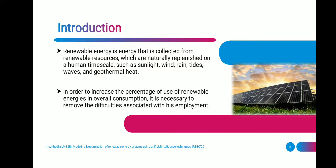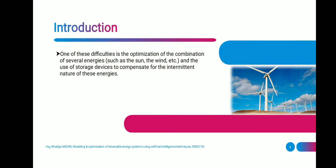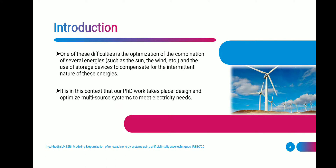In order to increase the percentage of use of renewable energies in overconsumption, it is necessary to remove the difficulties associated with its employment. One of these difficulties is the optimization of the combination of several energies such as the sun, the wind, etc., and the use of storage devices to compensate for the intermittent nature of these energies. It is in this context that our PhD work takes place: to design and optimize multi-source systems to meet electricity needs.